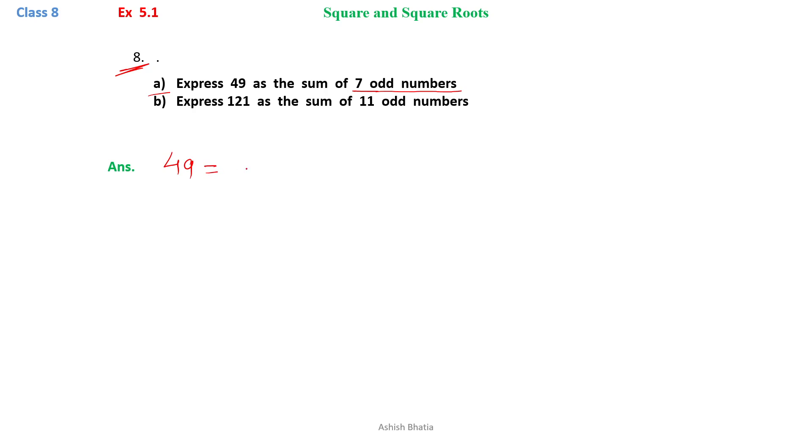As we know that sum of odd numbers is the square of the number, it is sum of 7 odd numbers, so we have to represent it as sum of 7 odd numbers.